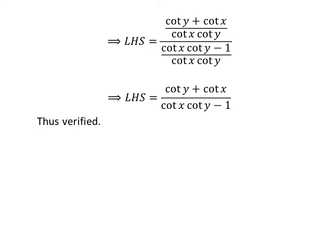Cancelling out the common factor 1 upon cotangent of x times cotangent of y in the numerator and denominator gives us: left-hand side equals cotangent of y plus cotangent of x, upon cotangent of x times cotangent of y minus 1, which equals the right-hand side of the identity. Thus, we have verified the identity.